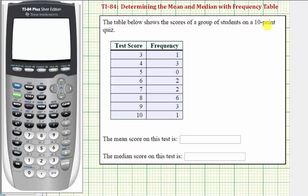Welcome to an example on how to use the one variable stats tool on the TI-84 to determine the mean and median when we're given a frequency table. The table below shows the scores of a group of students on a ten point quiz. In this first column we have the test score, in this second column we have the frequency of that score.